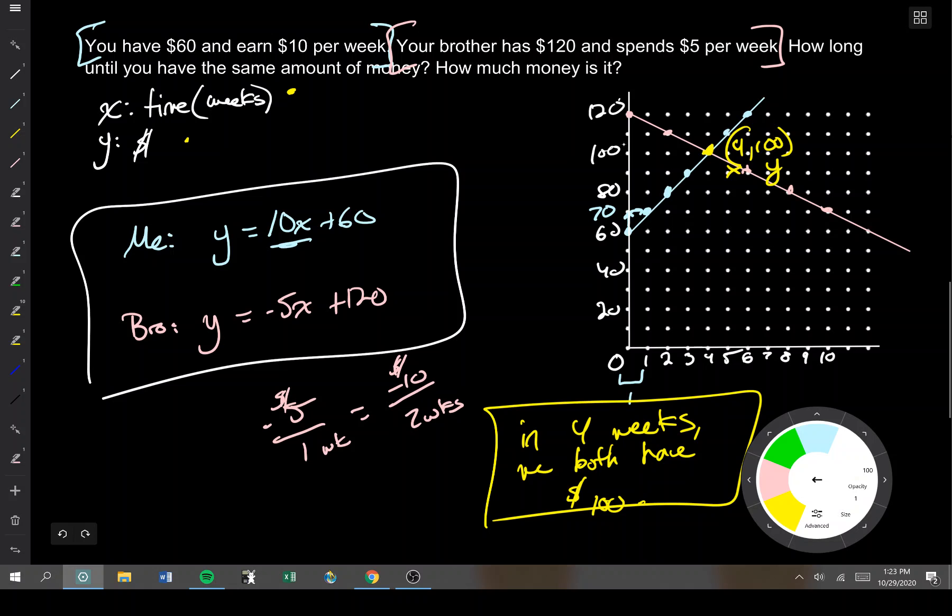A couple things to notice. I'm assuming we're not going back in time, and I'm assuming we can't have negative money. That is why I had everything graphed in quadrant 1. I put the x and y-axis in the bottom left corner. I'm also not going to worry about where this hits 0, or the fact that this keeps going up forever. What I'm really concerned with is just finding this point right here, that point of intersection. I should check to make sure that works. If I plug in a 4 for x, this becomes 100. If I plug in a 4 for x, this becomes 100 in 4 weeks for the same amount of money.